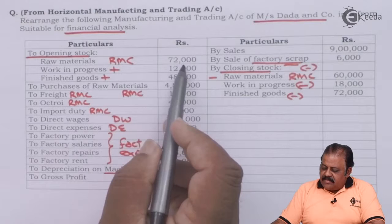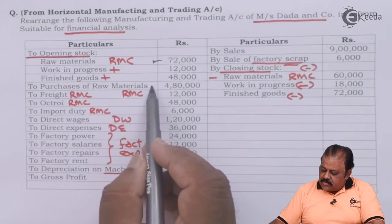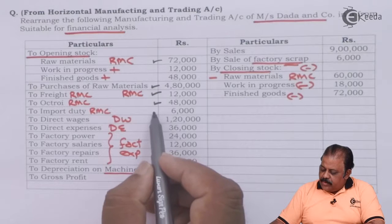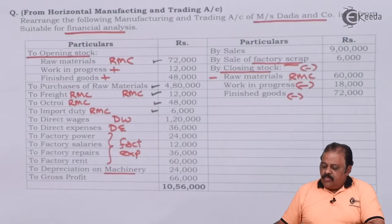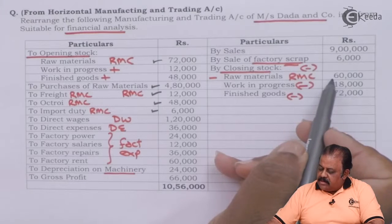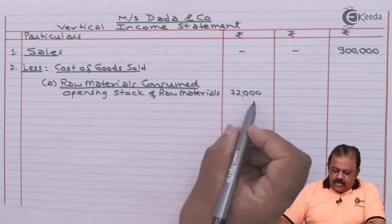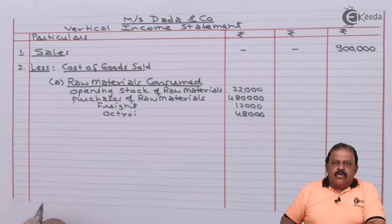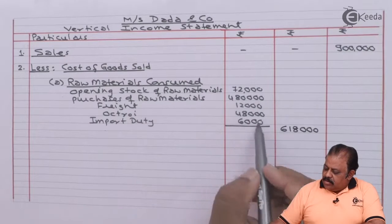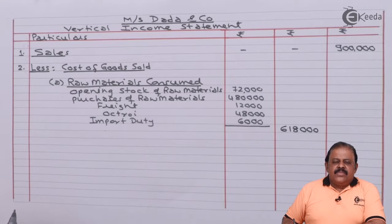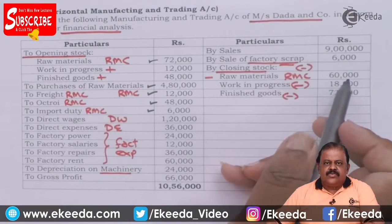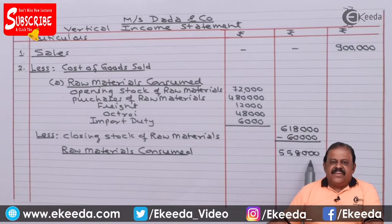Opening stock of raw material: 72,000. Purchases of raw materials: 4,80,000. Freight on raw material: 12,000. Octroi on raw material: 48,000. Import duty on raw material: 6,000. The total of all these items is 6,18,000. From this we deduct closing stock of raw materials: 60,000. So raw material consumed is 5,58,000.